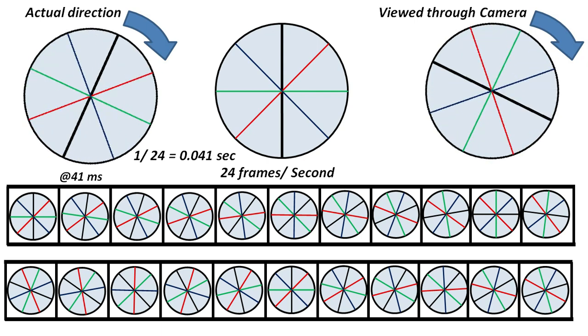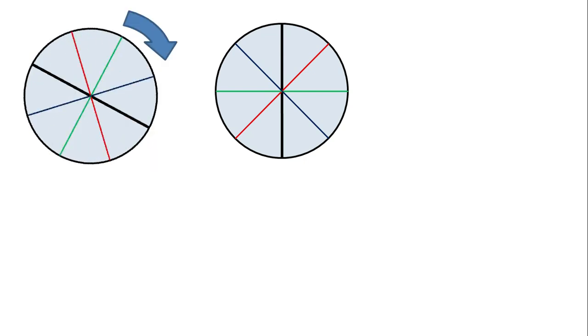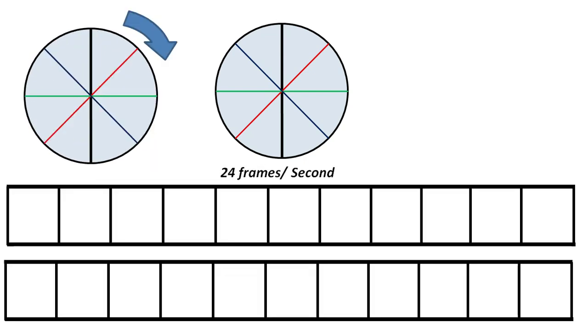Now we go to the next case. The same wheel is rotating faster now. Similarly, it will be recorded at 24 frames per second. The first picture is taken at this position. And after 41 milliseconds, the camera will be ready to take the second picture.